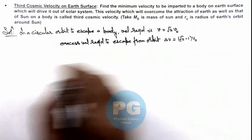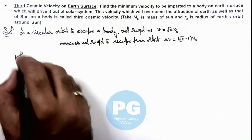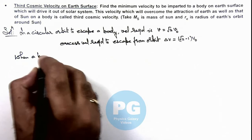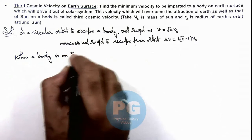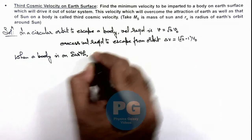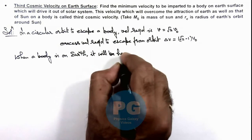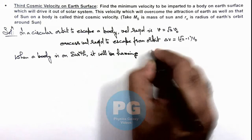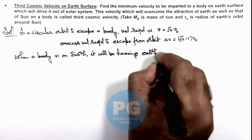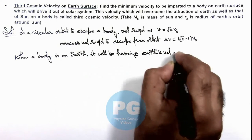So we can say when a body is on Earth, it will be having Earth's velocity around Sun.